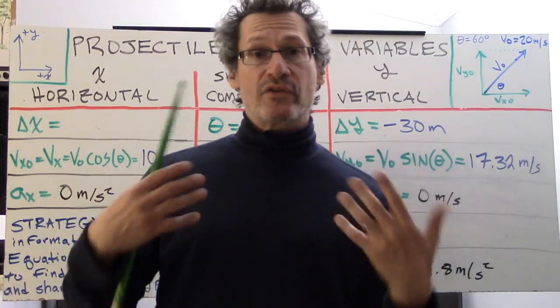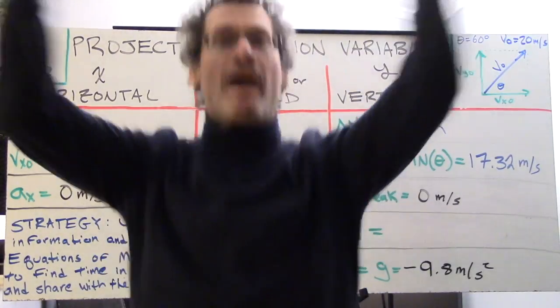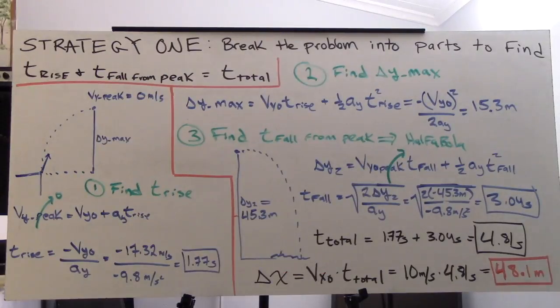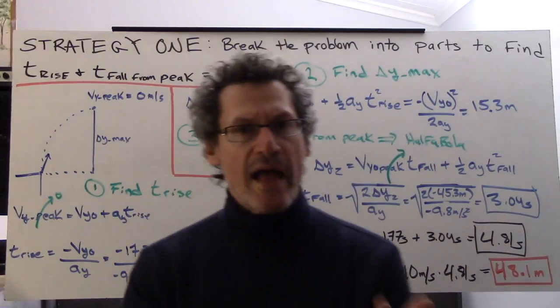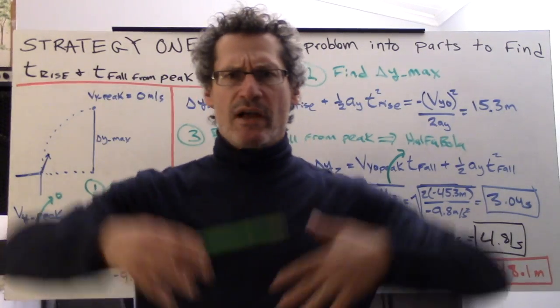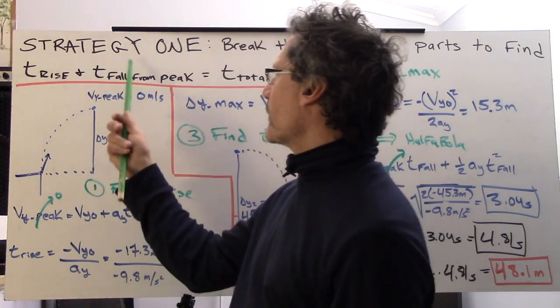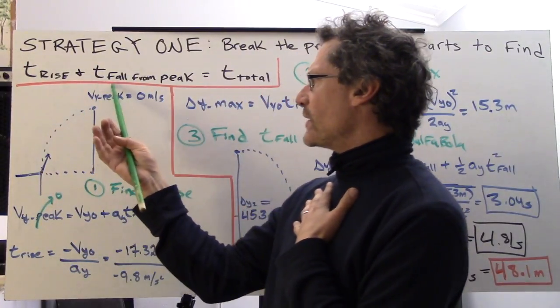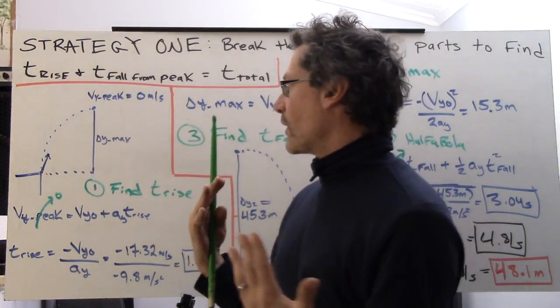Strategy one involves us breaking apart the problem. We can break this up into the rise and the fall: t rise and t fall from p gives us t total.